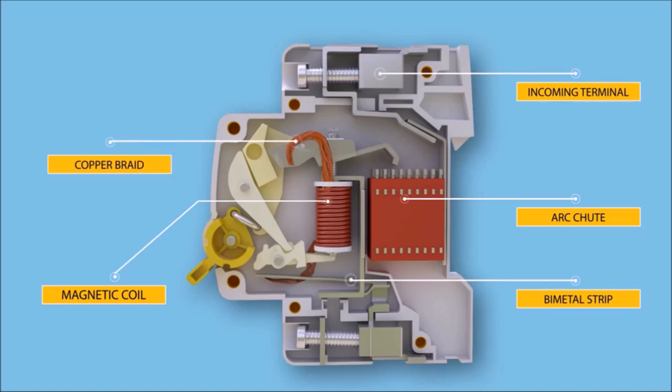The copper braid connects the moving element with the static element. The on-off switch is the operator with which we manually interrupt or turn on the electric circuit. The outgoing terminal is where we connect the outgoing phase from the circuit breaker.